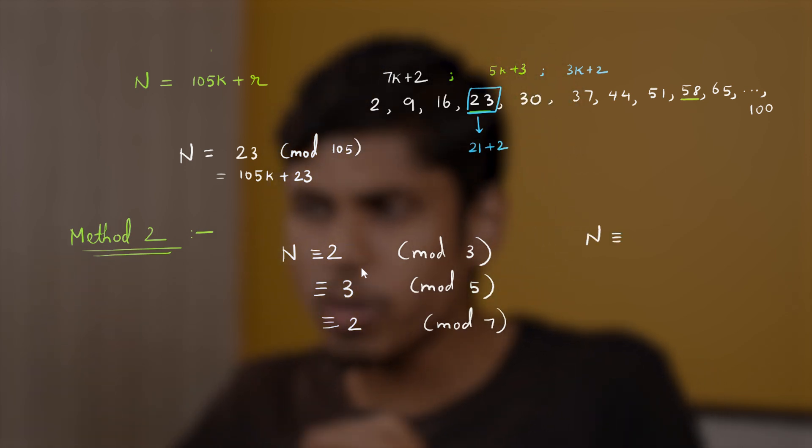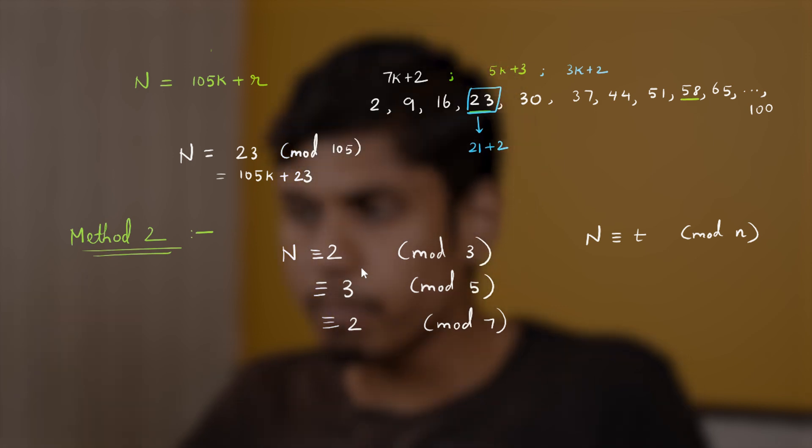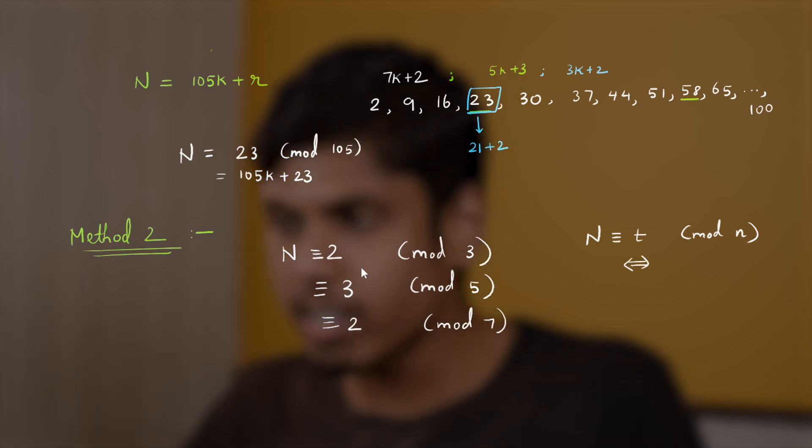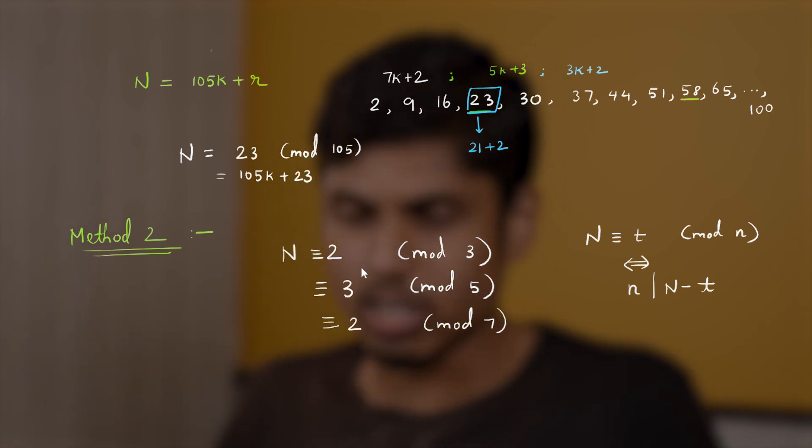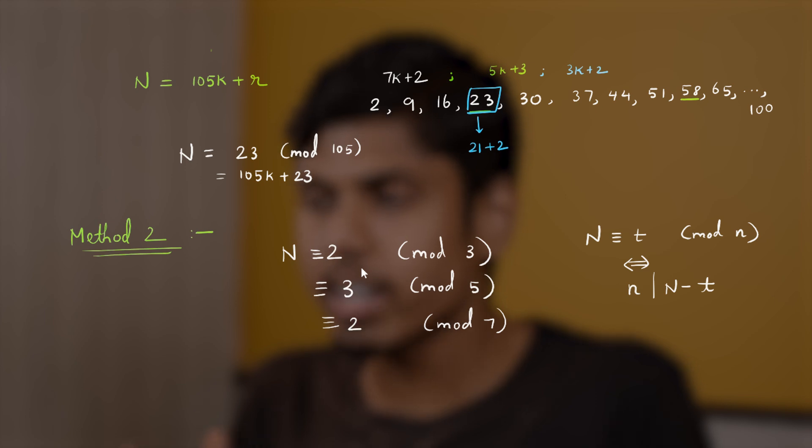But actually it need not. So you have to understand these subtle nuances here. N can be congruent to any number modulo n, which need not be the remainder. But the only defining criteria is that n should divide capital N minus t. That's it. So let's have that in mind. That instead of writing n dividing capital N minus t, it's a way to represent using congruences. That n is congruent to t mod n.